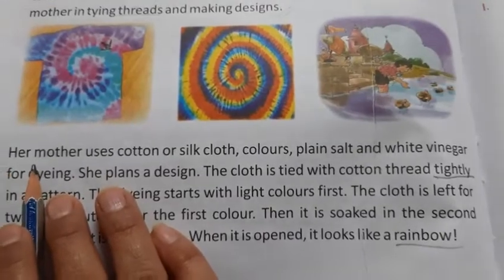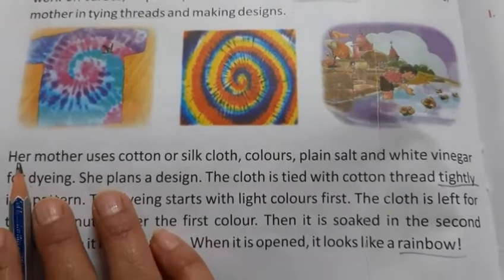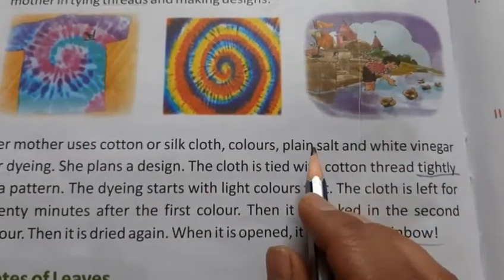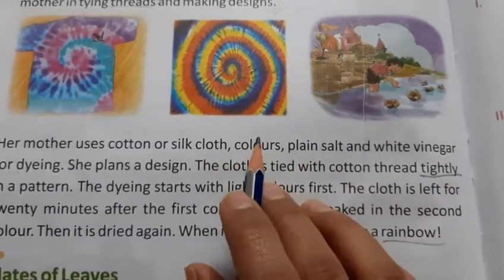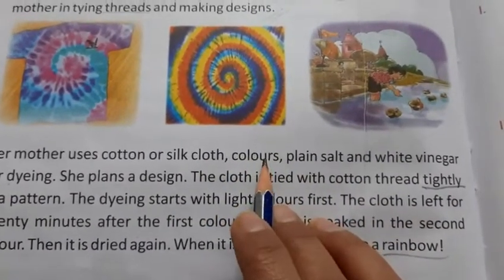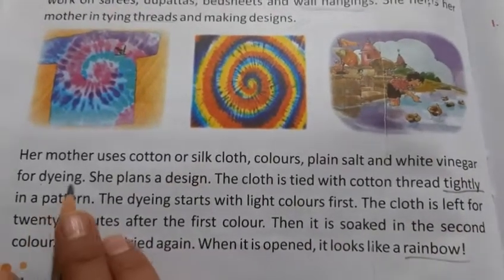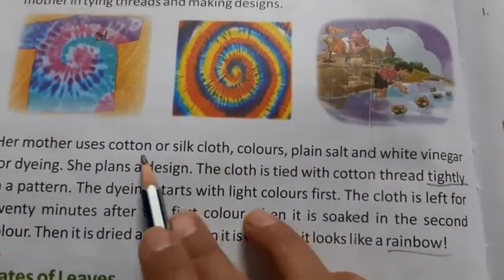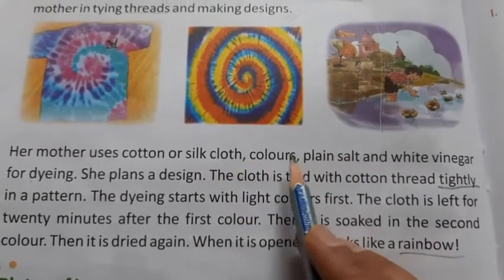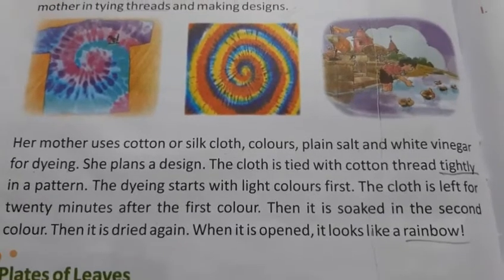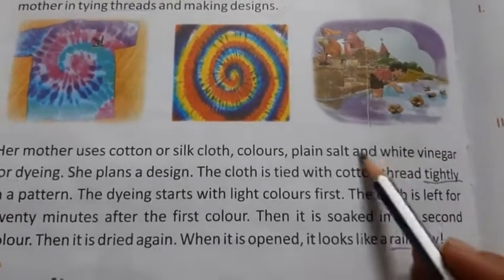Now let's see how his mother works. Her mother uses cotton and silk clothes for the tie-and-dye work. She uses colors, plain salt, and white vinegar for dyeing — cotton ya silk ka kapda, colors, plain salt, yaani ki saadha namak jo hum log khaane mein use karte hain.